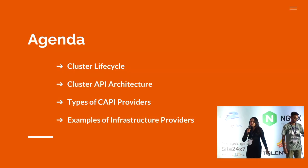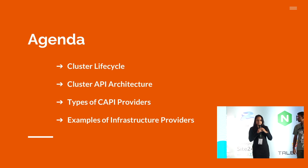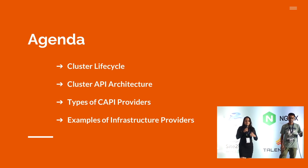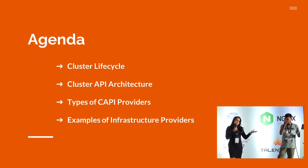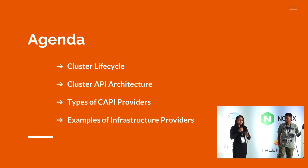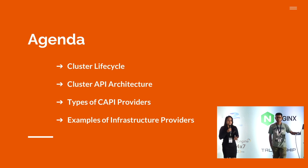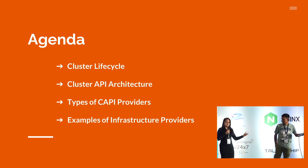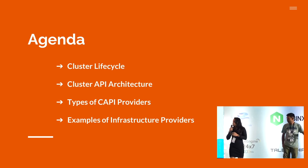Moving over to the agenda: we'll discuss the cluster lifecycle, why it's very hard to maintain the cluster lifecycle manually, and why we need automation. We're living in the DevOps world — we love automation. We'll also cover the types of Cluster API providers. There's a common misconception that Cluster API only has providers like GCP or Azure, but under the infrastructure category there are providers like GCP, Azure, and AWS.